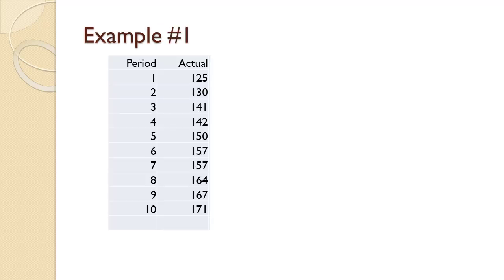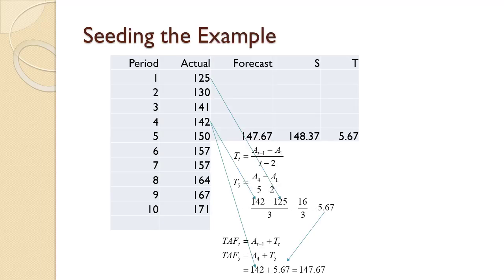For the data shown on the slide, we wish to compute the trend-adjusted exponential smoothing forecast. The forecast will begin in period 5. We use an alpha value of 0.30 and a beta value of 0.20. We wish to carry out the forecast for as far as possible. Since this problem begins with period 5, there are no calculations for periods 1 through 4.